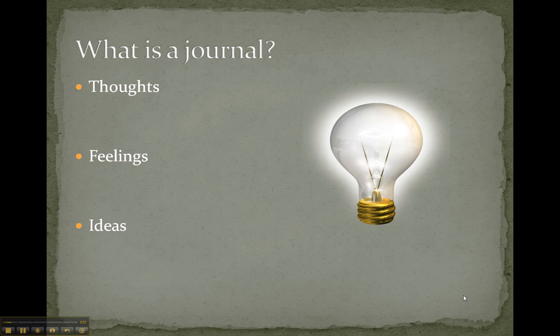First of all, you might want to think about exactly what a journal is. Another way of thinking about a journal would be as a diary, but very simply, a journal is just a place where you can write down your thoughts, feelings, and ideas about different topics or things that have happened during the day or during the week.